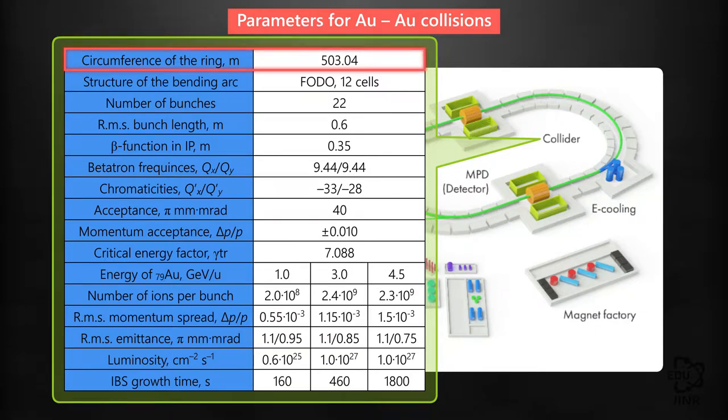The circumference of the collider ring is about 500 meters. The collider consists of two bending sections, the so-called bending arcs, and two straight sections where the principal detector facilities and additional systems are located.